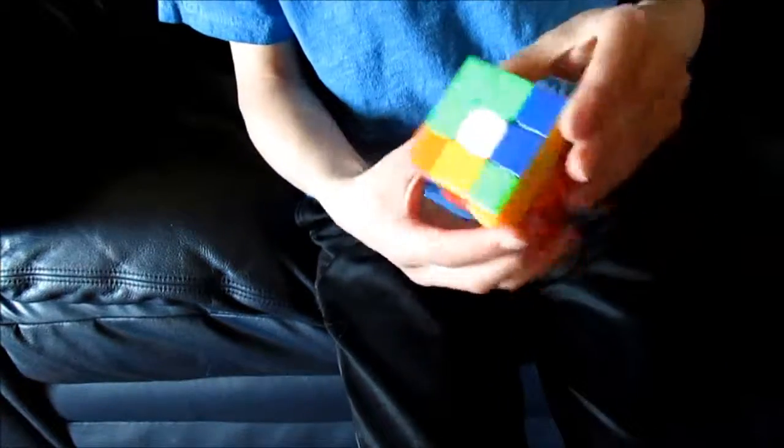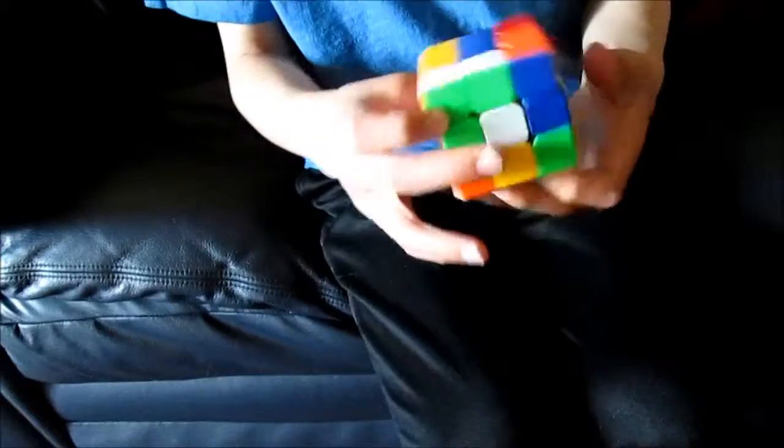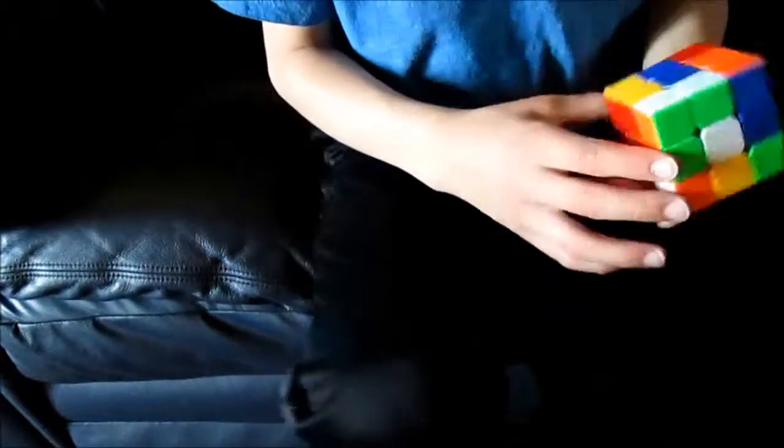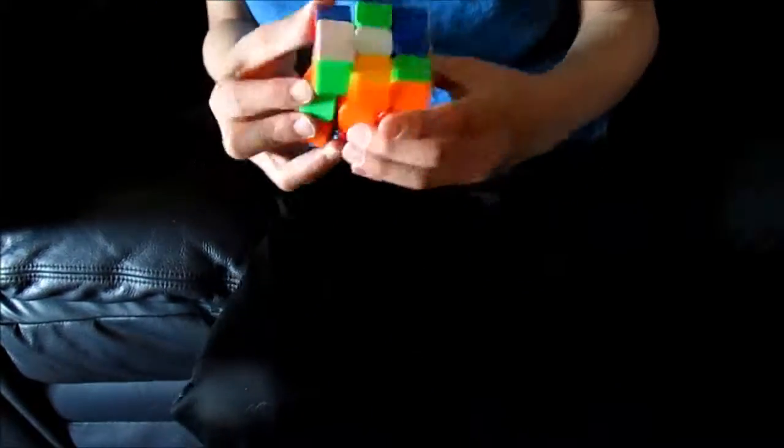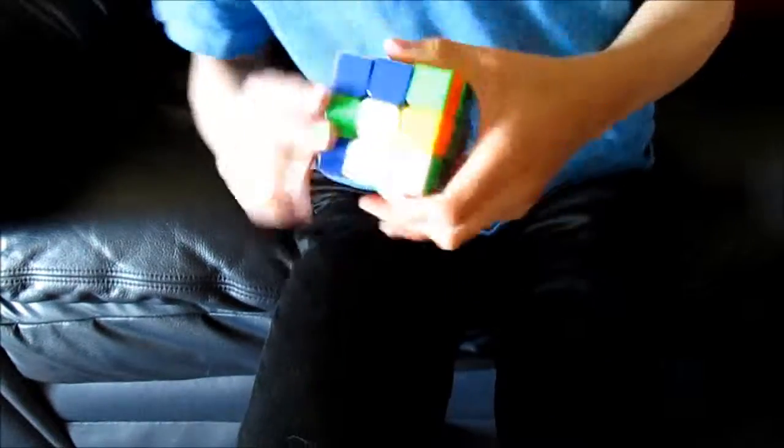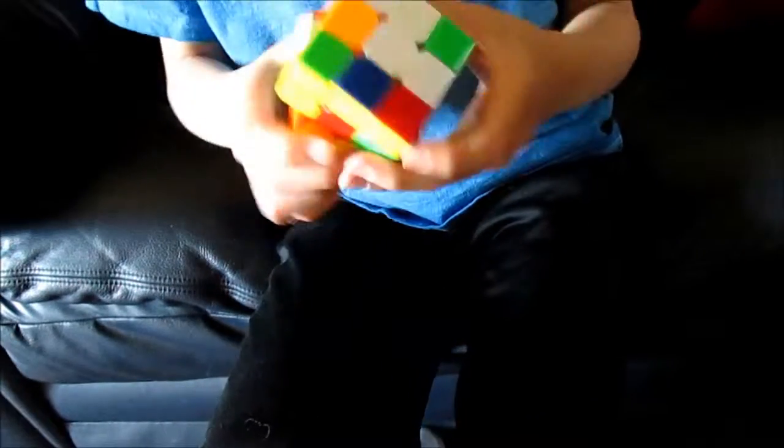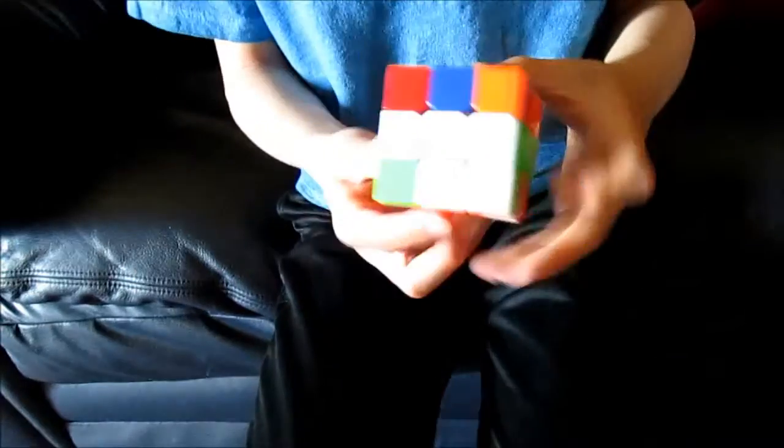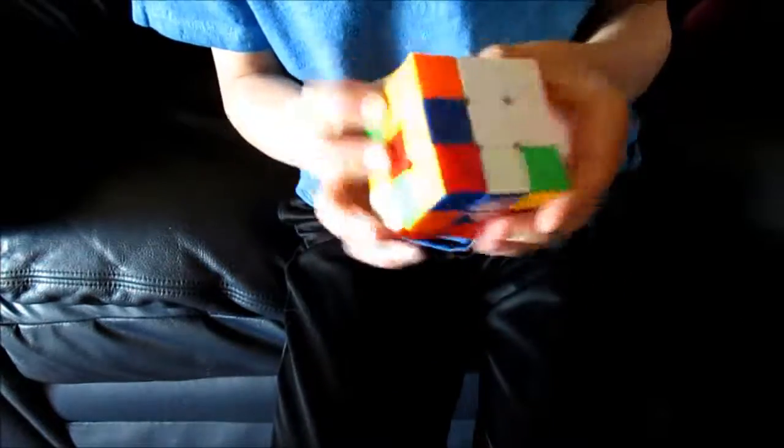So after you get your sides with F2L and then you do your OLL, right? So you have to do that first. Oh man, why did I mix this up?